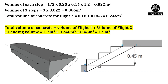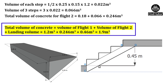Finally, the total volume of concrete for the whole staircase will be equal to volume of flight 1 plus volume of flight 2 plus landing volume. On substituting these values, the total volume of concrete required for this staircase will be equal to 1.9 meter cube. So this was all about this lecture. If you like my content, please subscribe to my channel and don't forget to press the bell icon so that you don't miss any updates in future. Thank you.